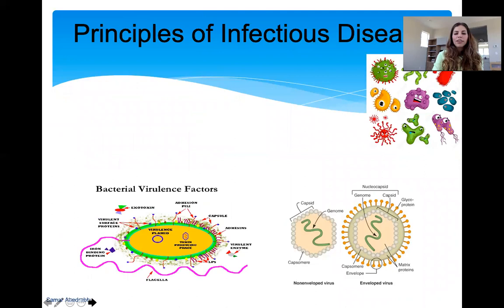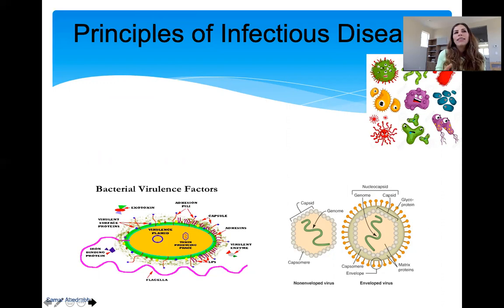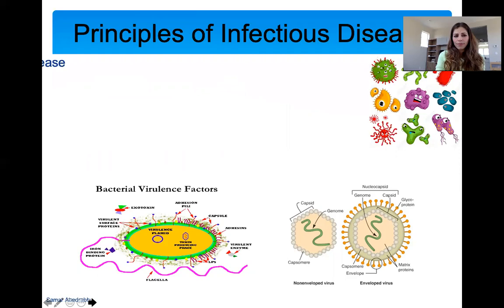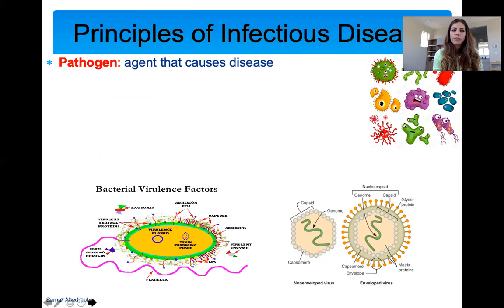Now we've covered the normal microbiota, and I'm going to talk about principles of infectious disease. Infectious diseases involve microbes that are bad — we're basically moving from good host-microbe interactions to disease: what happens when we have bad host-microbe interactions? This is an example of parasitism, where one organism is harmed and the other benefits. I'm going to give you some terms to know, especially as microbiology students.